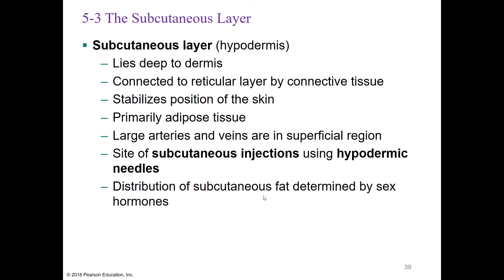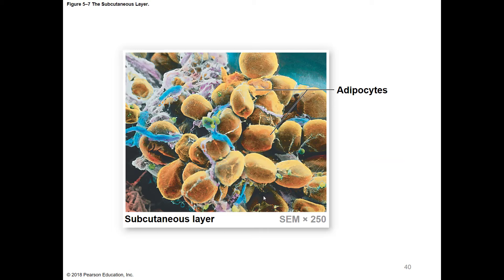The subcutaneous layer, also known as the hypodermis, is deep to the dermis and connected to the reticular layer by connective tissue. It helps stabilize the position of the skin and is mostly fat or adipose tissue. There are large arteries and veins in it, making it a great place for subcutaneous injections using hypodermic needles—injecting at this level allows quick entry into circulation through these large vessels. The distribution of subcutaneous fat is determined by sex hormones. Under the electron microscope, the majority of what we see are adipocytes, or fat cells.